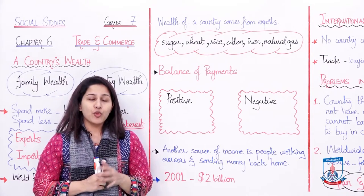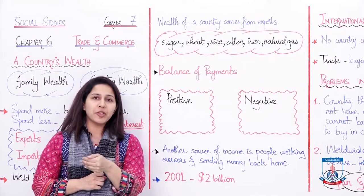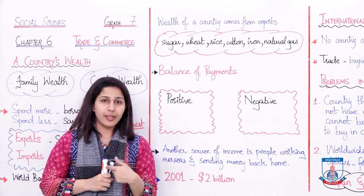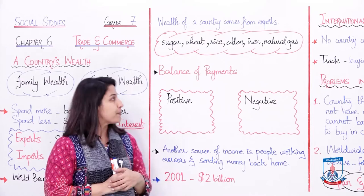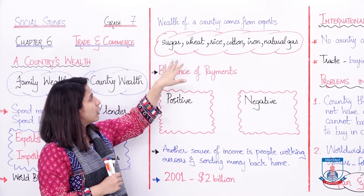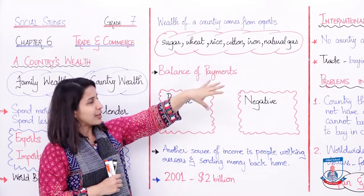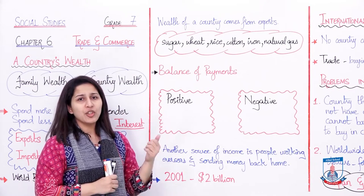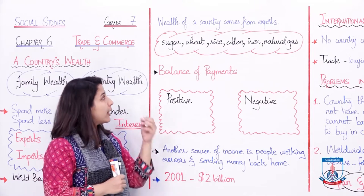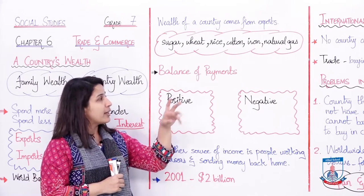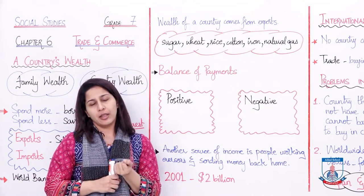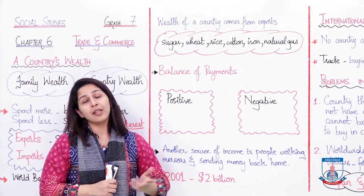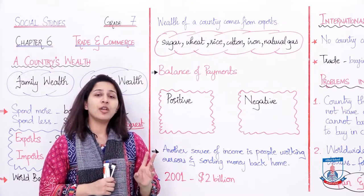Wealth of a country comes from exports. Joh mulk ka paisa hai, woh exports se aata hai — kyunki yeh woh sara paisa hai joh agar mulk bahar cheeze bechega toh uske paas aayega. Imports is kharcha — yeh woh paisa hai joh mulk kharch karega to buy things from other countries. Exports mein joh main cheeze hai woh hai: sugar, wheat, rice, cotton, iron, natural gas. Basically joh humari zarai products hai — chini, gandum, chawal, cotton, iron, natural gas — woh as raw materials baahir export ki jaati hai. Aur baahir ke mulk hamse — Pakistan se — ye raw materials khareed ke, apni industries mein products banaate hai aur phir un products ko mehnge daam all over the world bechte hai. So is se unki economy, unki maaishat strong hoti hai.